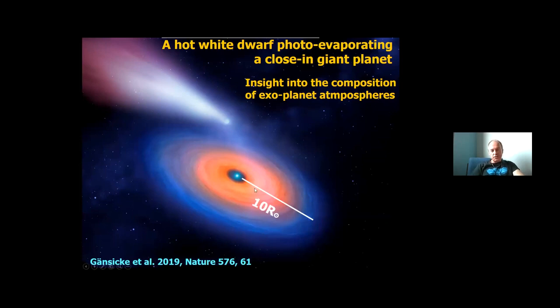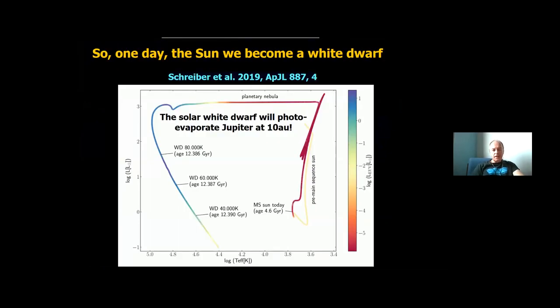And that's how we imagine the system looks like. We have a large disk, about 10 solar radii, an evaporating planet. And the exciting part is that we can measure the abundances of exoplanet giants by looking both at the disk and the white dwarf photosphere.